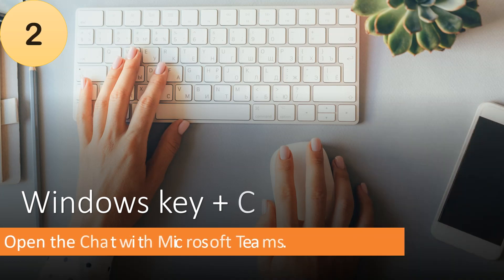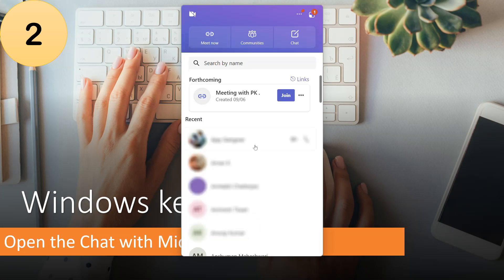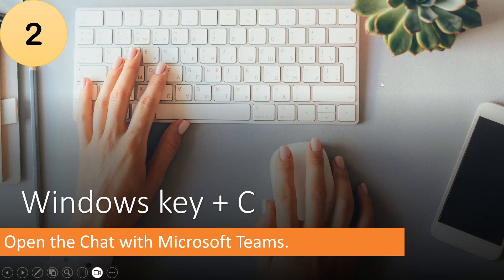The next shortcut key is Windows key plus C. If you want to quickly open Microsoft Teams to chat with your colleagues or friends, simply press Windows key plus C. It will quickly open Microsoft Teams on your screen and you can start chatting.